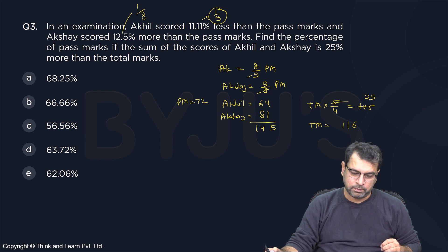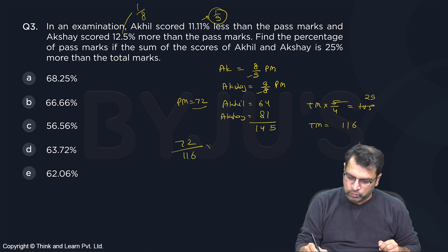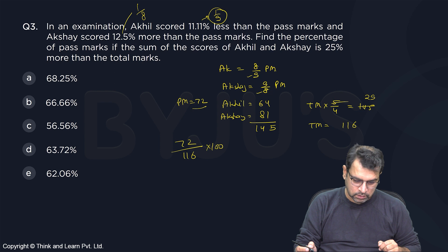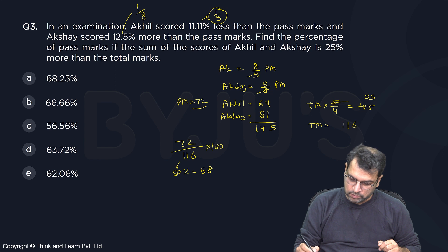The question is: find the percentage of pass marks. So we need to find 72 over 116 into 100. Looking at the options, they are all above 50. Starting with 50% of 116, that is 58, and 10% is 11.6.